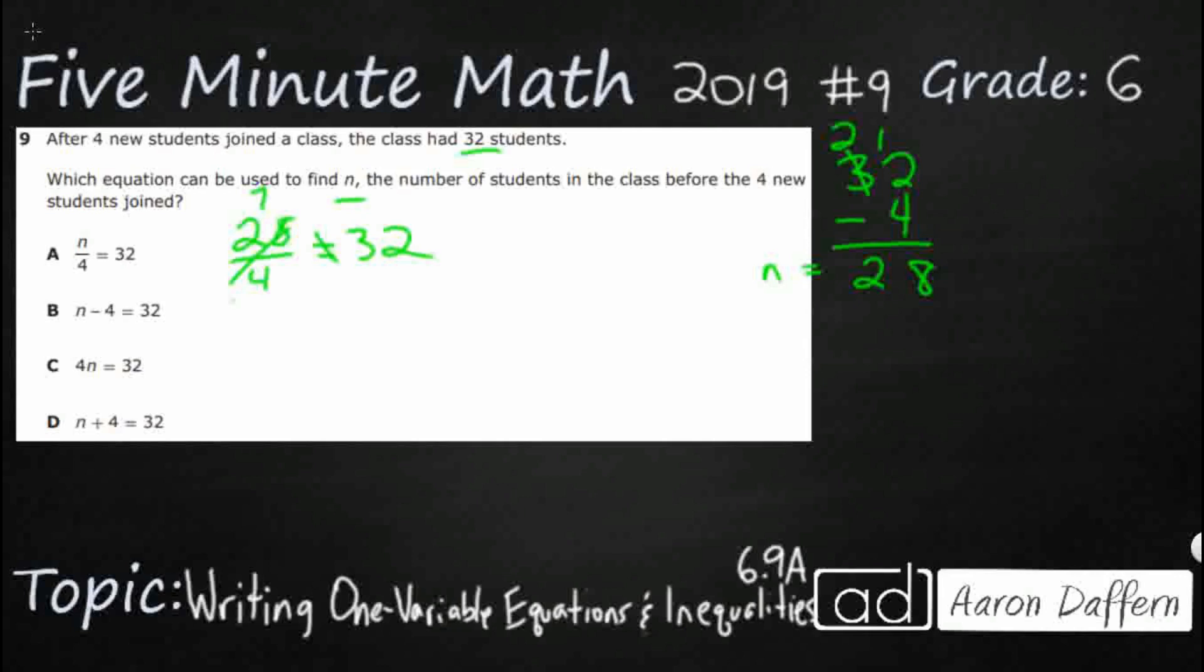Look at B. 28 minus 4 equals 32. Let's see, 28 minus 4, no, that's going to make 24. So it's actually going in the wrong direction there.